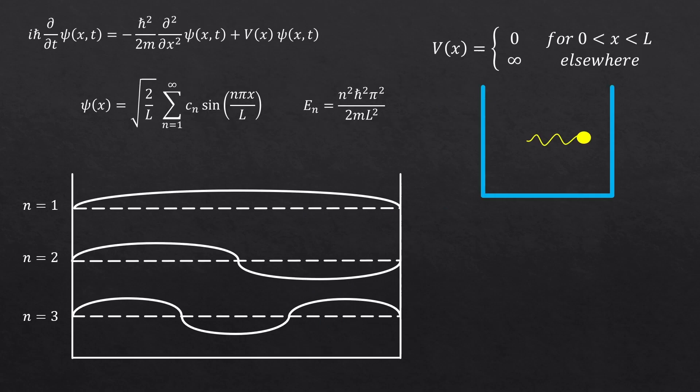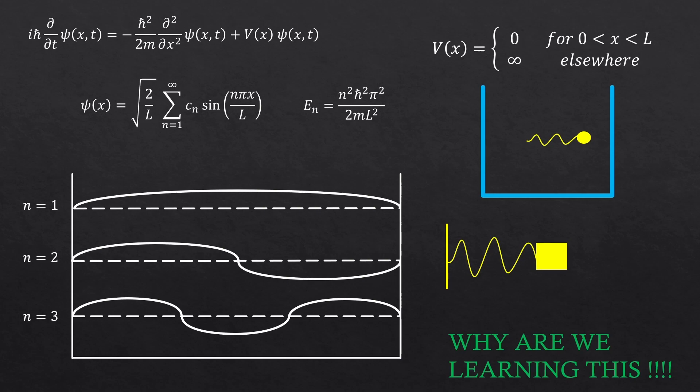Some of you might have somewhat understood the math from school already, like they all make sense. And professors or people on YouTube often mention a mass attached to a spring that's oscillating back and forth. Why all of a sudden are they talking about this oscillation? Why are we learning this in quantum mechanics?